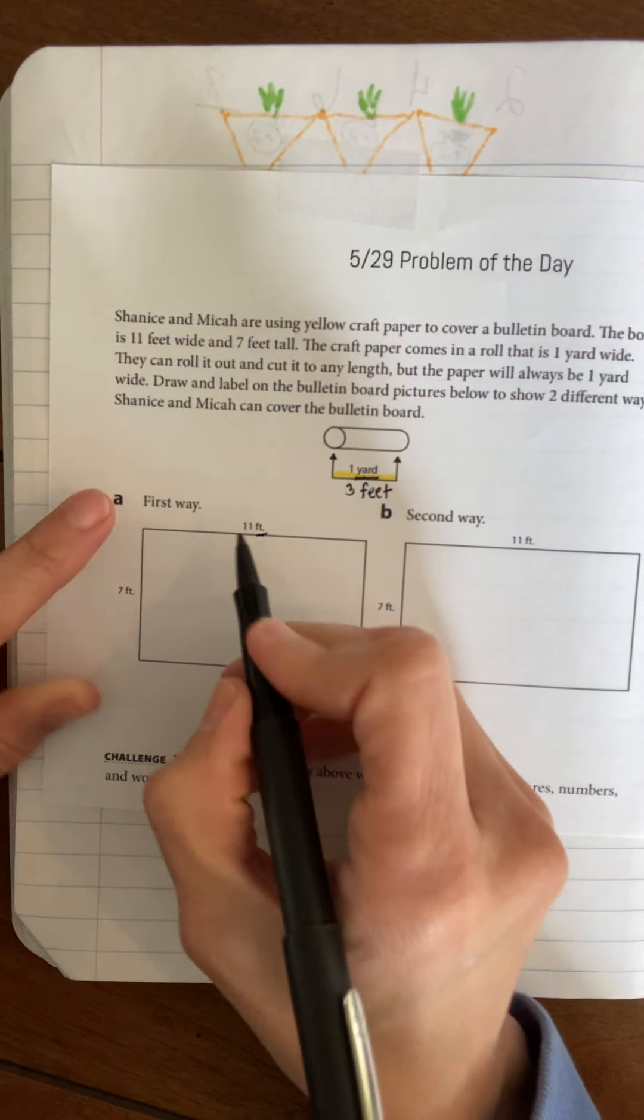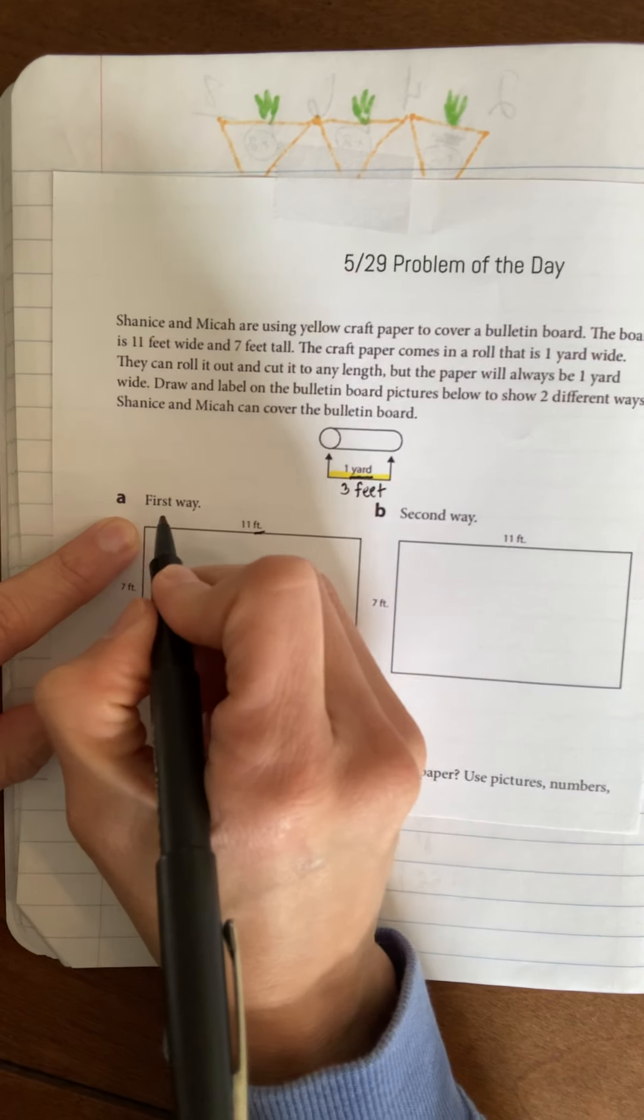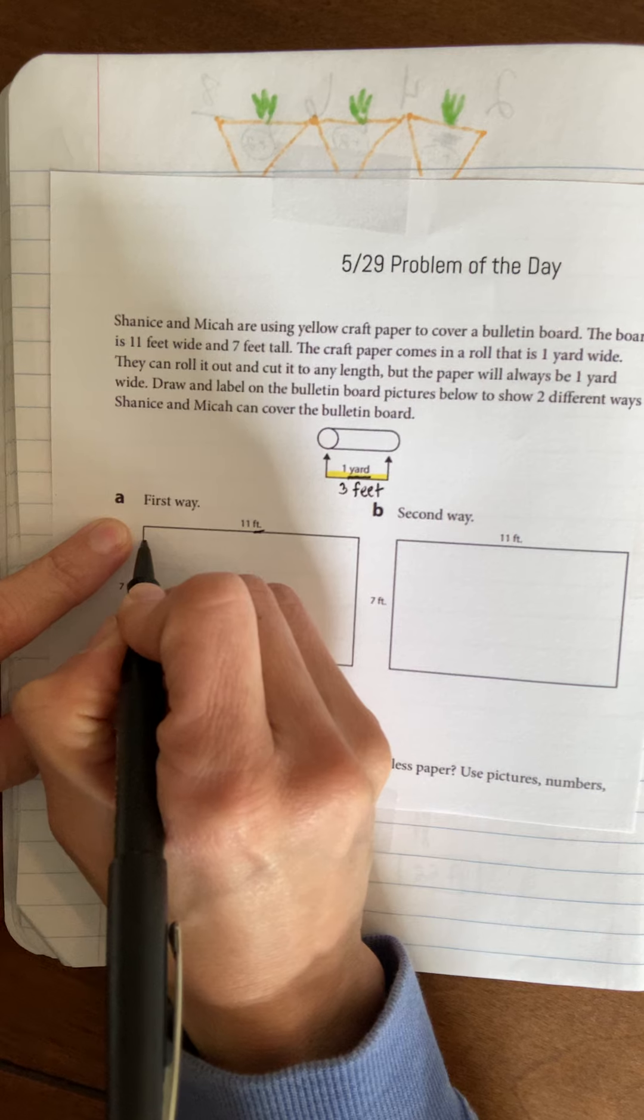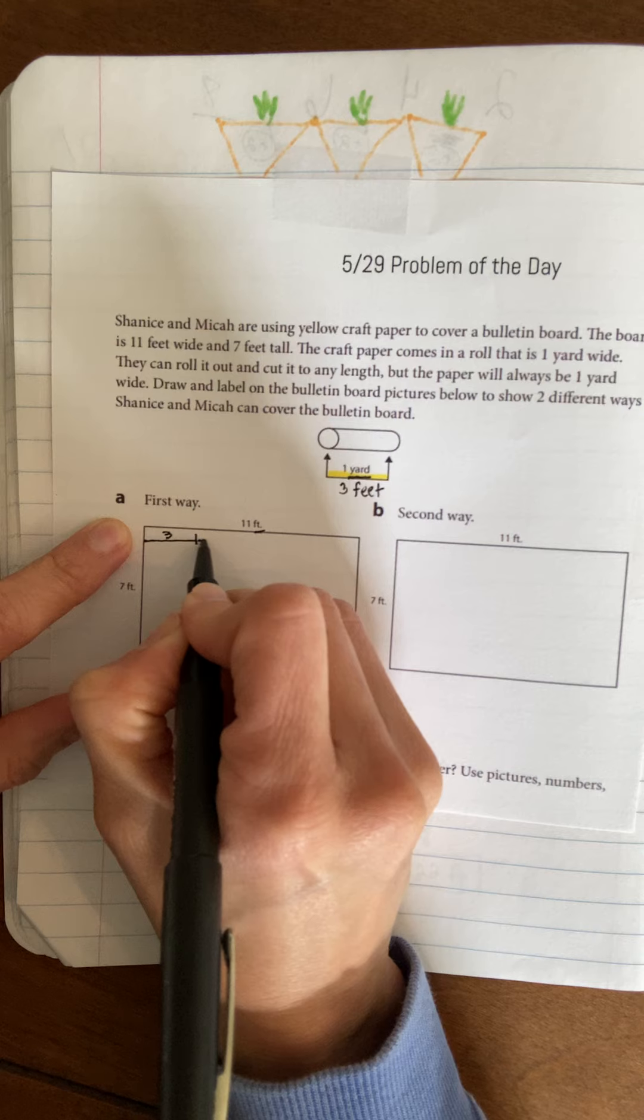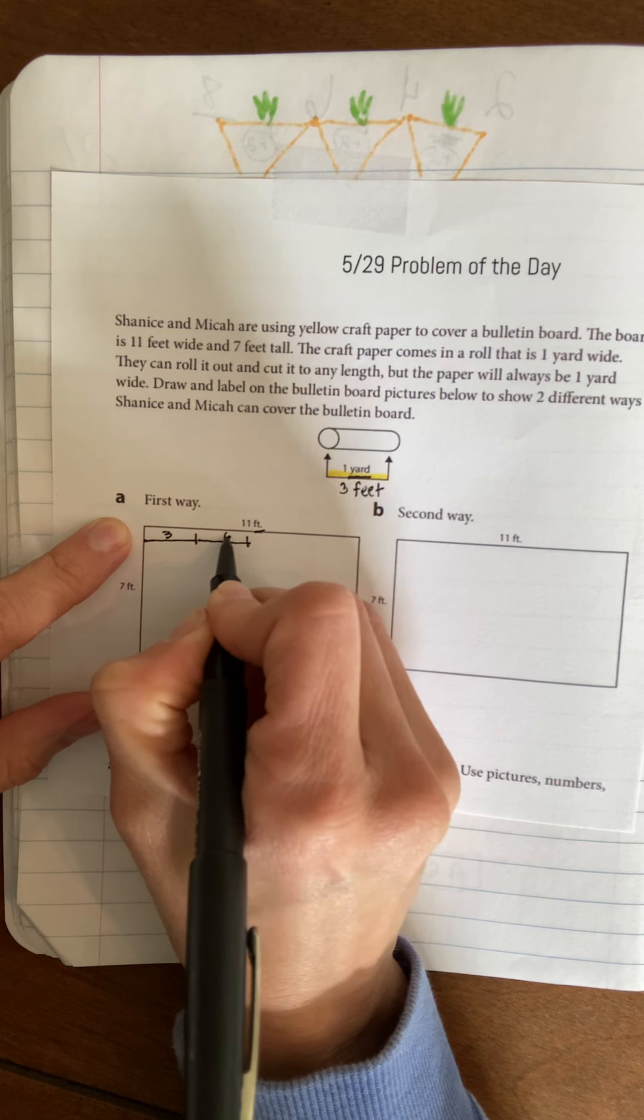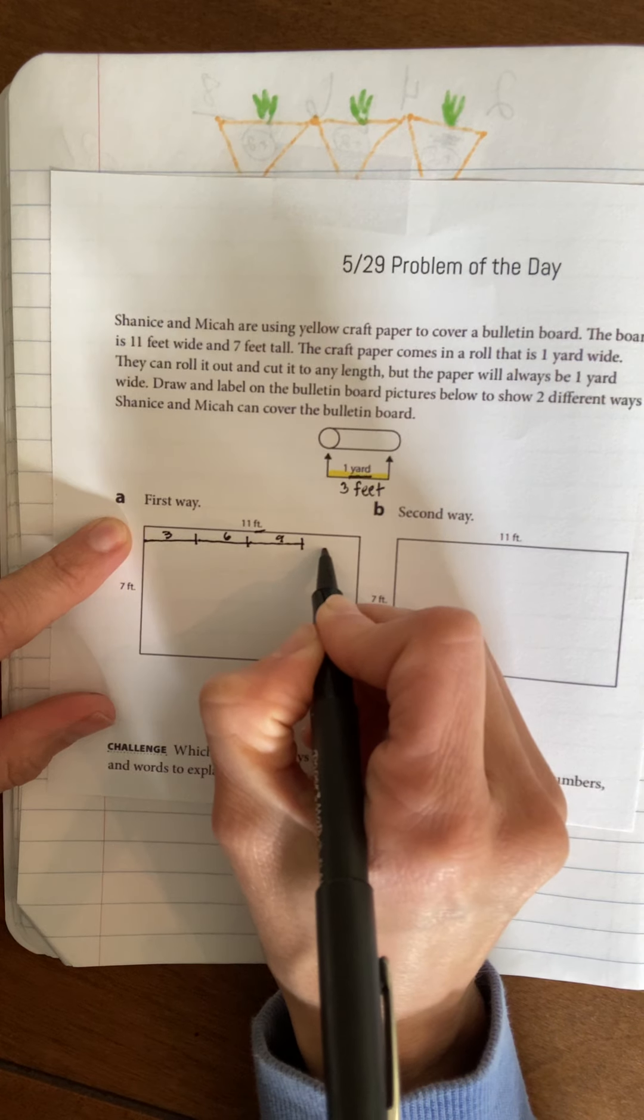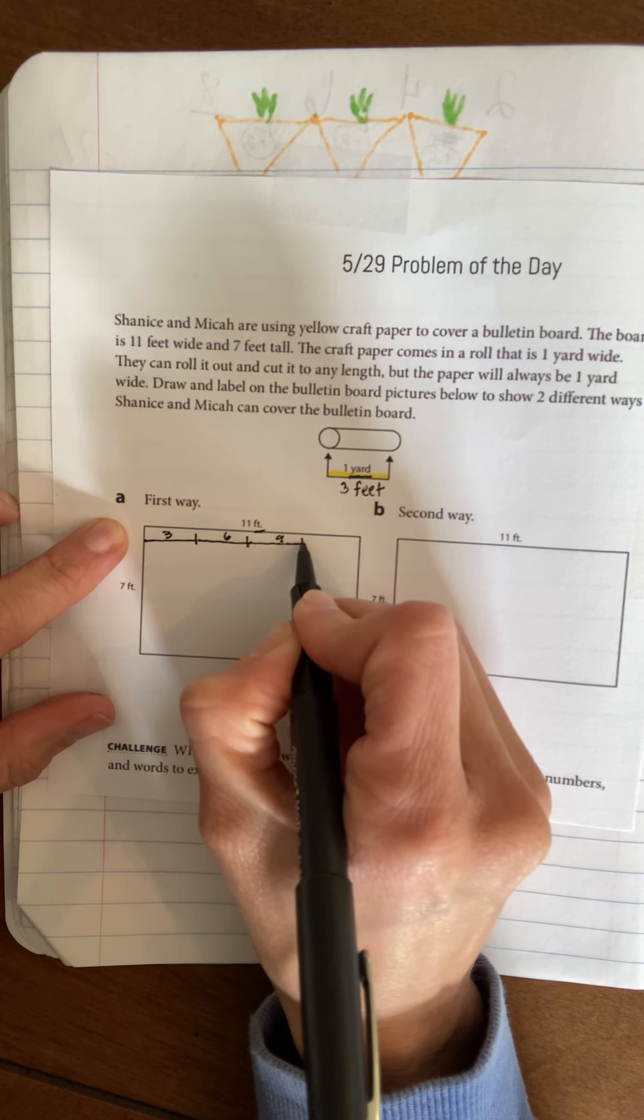One way I can roll out the paper is to lay it out into sections of 3 feet. So if I did 3 feet here - 3, 6, 9... The only thing is, this would go a little bit over to 12.